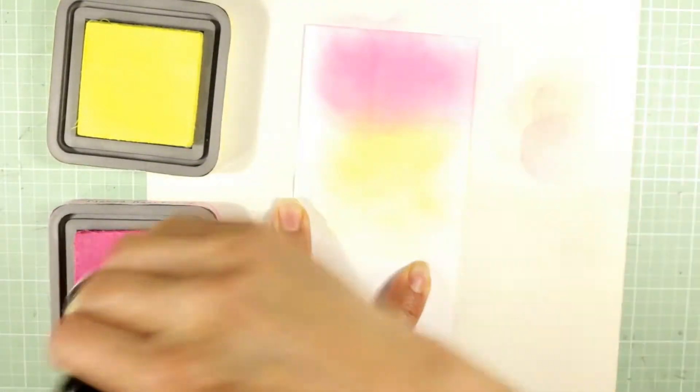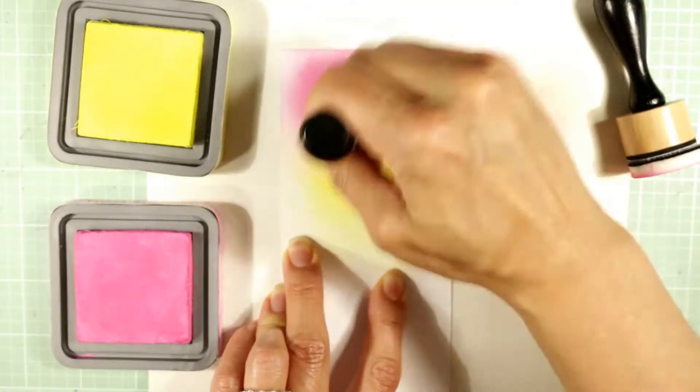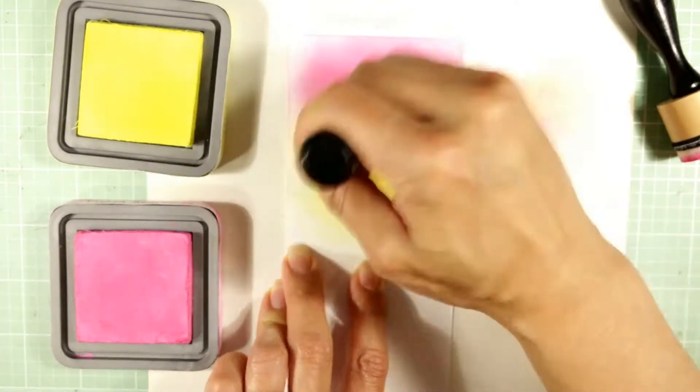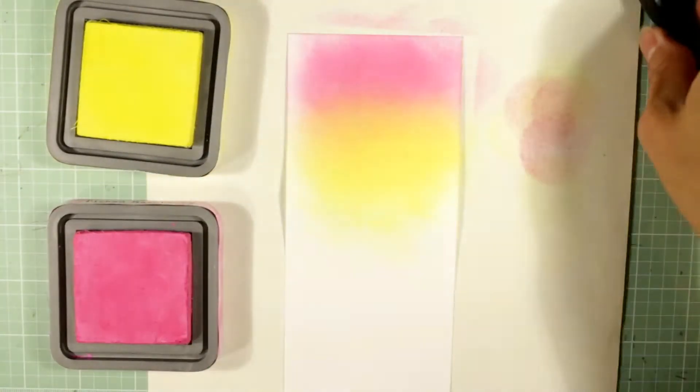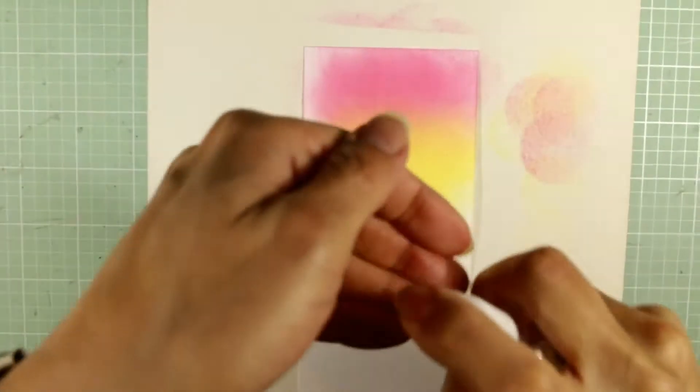I'm going back and forth, just blending it on with my blending tool. I'm going back in in that area where the two colors meet, back in with the lemonade color. I think that's giving a soft transition. I'm doing that for the little card front window.